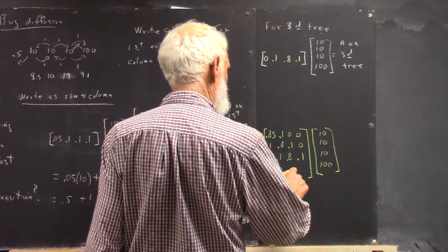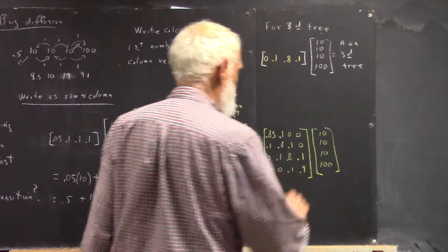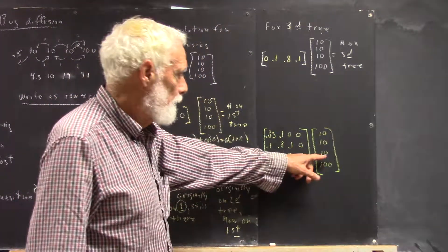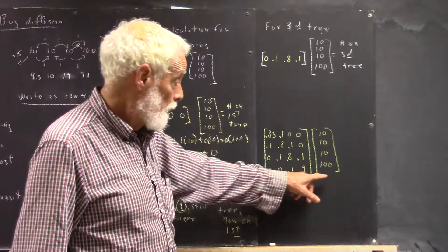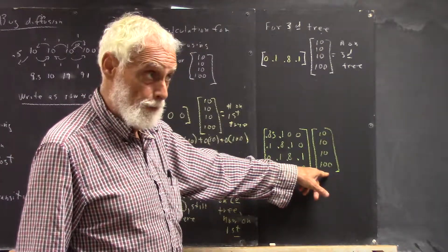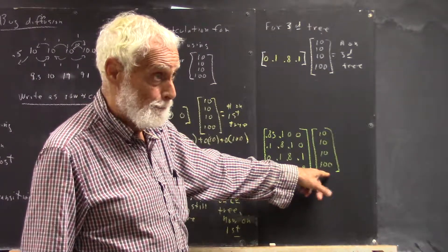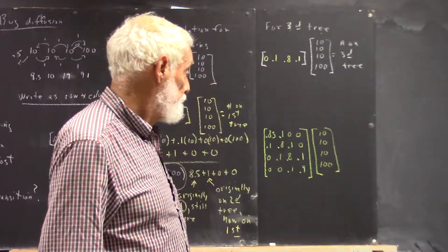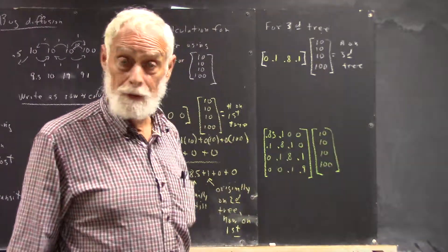And now our last row is going to be zero, zero, point one, point nine, because ten percent of the bugs on the third tree will go to the fourth. Ninety percent of the bugs on the fourth tree will stay on the fourth. So now we see how to write down a model for this.